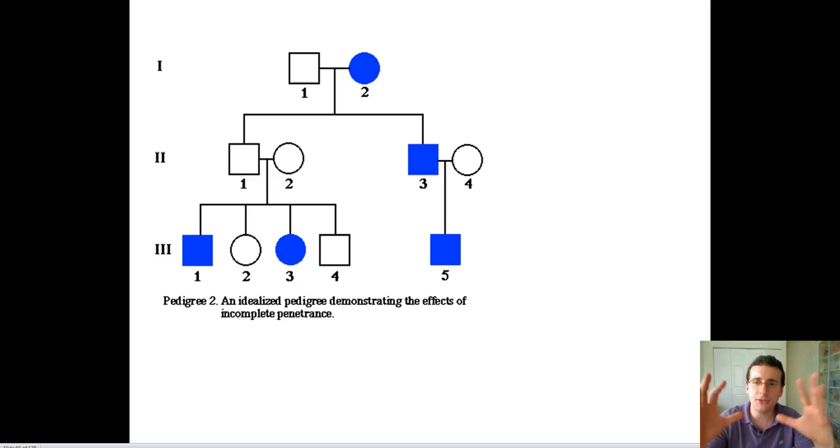So because genes interact with the environment, sometimes the dominant genes do not show up in that generation, and you get what is called an incomplete penetrance situation where the genes do not show up in a pedigree even though they should, and it tricks you into thinking this is a recessive trait.